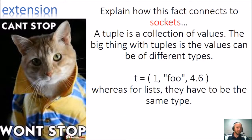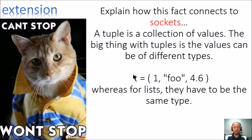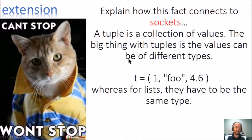For an extension activity, explain how this fact connects to the concept of sockets: a tuple is a collection of values, and the values can be of different types — such as an integer like 1, a string like 'foo,' or a floating point number like 4.6. Whereas lists must be the same type. There's a similarity and difference between tuples and lists — can you connect this fact to sockets? If you're not in my class, let me know in the comments below.